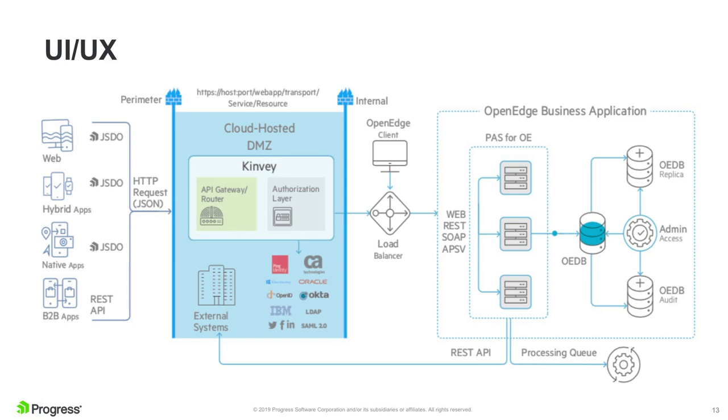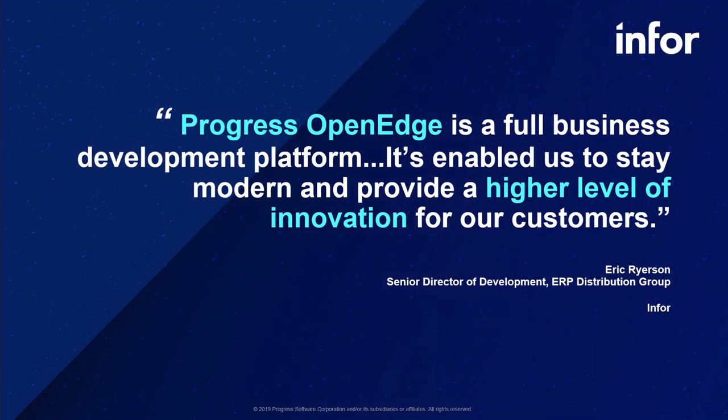In that scenario, Kinvey can act as that API gateway and router layer in the DMZ. Just a couple of validation points: Infor is one of our largest OpenEdge partners, and they've been going down this path of application evolution and moving to a cloud architecture for several years now. A quote from Eric Ryerson validates that they believe OpenEdge has evolved to allow them to continue to innovate, validating that OpenEdge is a great platform for innovating towards modern best practice architectures.